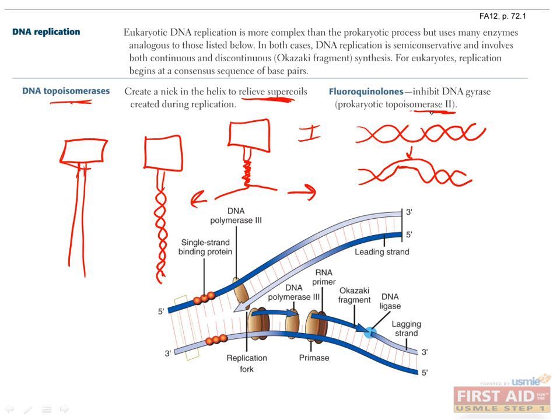Type 2 topoisomerases do require ATP, and they cut both strands of double-stranded DNA and then pass another double-stranded region through the hole before re-annealing it. This can also be used to add coils to the DNA for the purpose of storing it in chromatin.